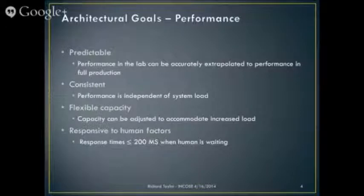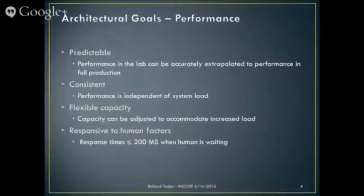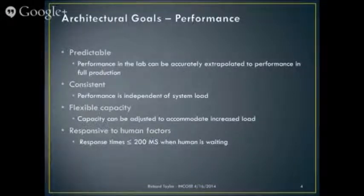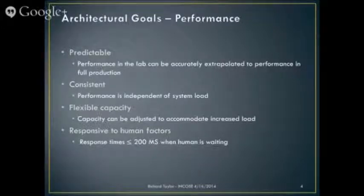What do we mean by performance? What are we looking for in the system when we talk about having high performance? First of all, it needs to be predictable — meaning you can predict what the performance will be before you actually deploy it. You should be able to test something in the lab and make a prediction of what it's going to look like in the field. If you can't, that system is not scalable. When I designed the system for the last two decennial censuses, you had something in the lab which was less than 1% of what it was going to look like in the field. Yet when it was deployed, it was predictable exactly to what it was going to be. It can be done. But nothing in nature scales linearly by accident.